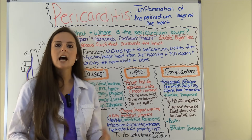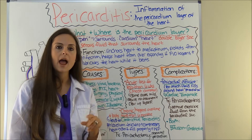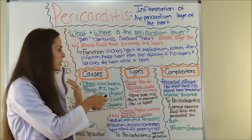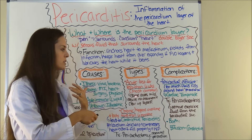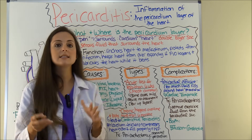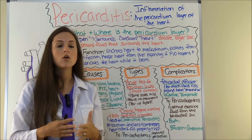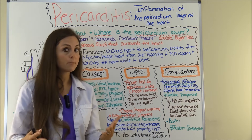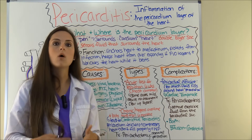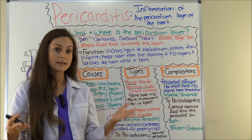Now let's talk about the different types of pericarditis. You have acute and chronic. Acute is where a patient develops pericarditis for less than six weeks — this is the most common type. Many cases of pericarditis tend to be mild; they don't require treatment and go away by themselves.